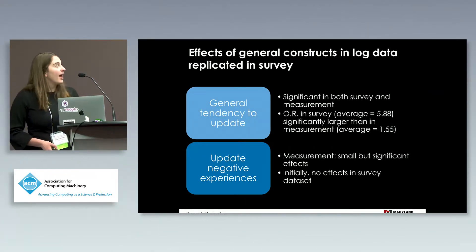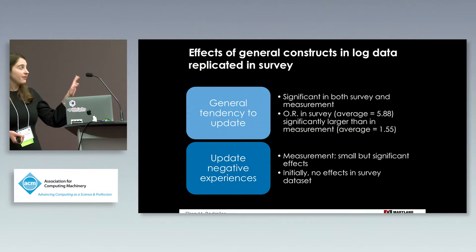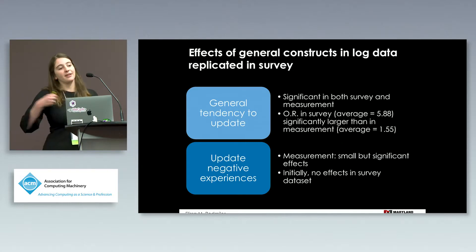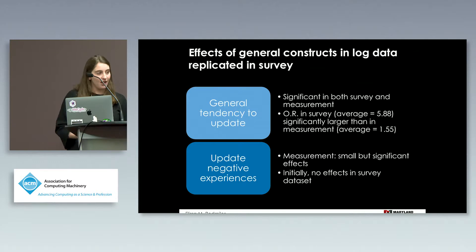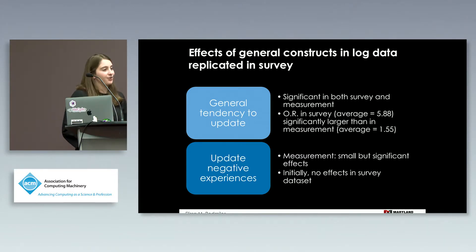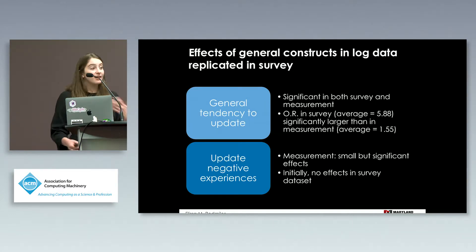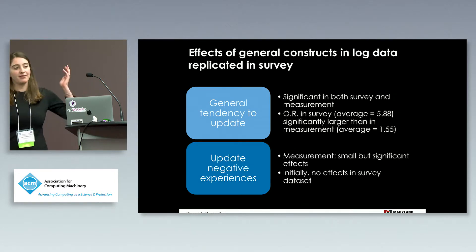In general, we found that the effect of the general constructs — the perceptive factors — were replicated in the survey data. People who generally tended to update also updated faster in the log data, and those who reported generally tending to update said they intended to update faster on the survey as well. However, the effect was larger in the survey data than in the log data, potentially another social desirability effect. For negative experiences: those who had negative experiences with system crashes were more likely to update, while those who experienced more application crashes after updating were less likely to update — we saw this in the measurement data, but initially did not see this in the survey data.